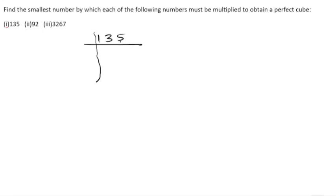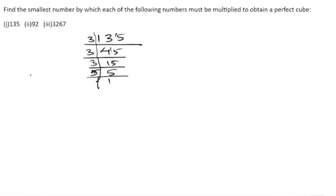Since the last digit is 5, there is a possibility we can go with 5, but if we add the digits 1+3+4, 4+5 is 9, so we can go with 3. Dividing: 3×45=135, 3×15=45, 3×5=15, 5×1=5. So 135 equals 3 × 3 × 3 × 5.